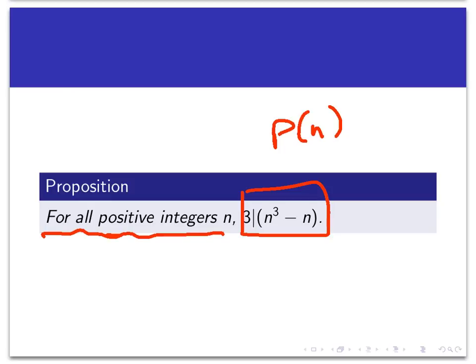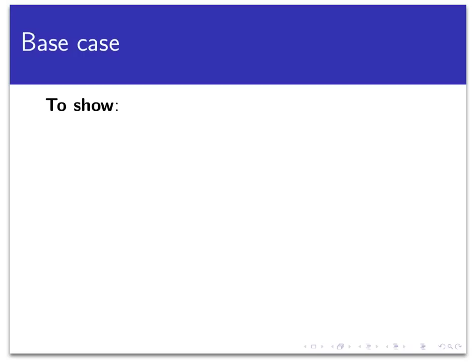So as with all proofs by mathematical induction, we have two stages to complete. We need to complete the base case first, where we're going to show that P(1) is true, and then we're going to work with the inductive step. So we'll get to the inductive step later, let's do the base case now.